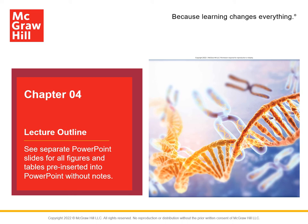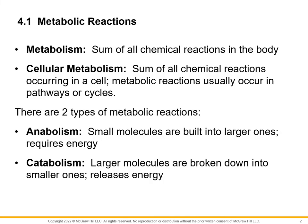Hello everyone. Today we're going to look at the first part of Chapter 4, which is going to be involving cellular metabolism. We talked about metabolism — we said it was the sum of all chemical reactions of the body. Now in the cell, we also have metabolism; we call it cellular metabolism. Just like metabolism for the whole body, this is just the sum of all the chemical reactions occurring in the cell.